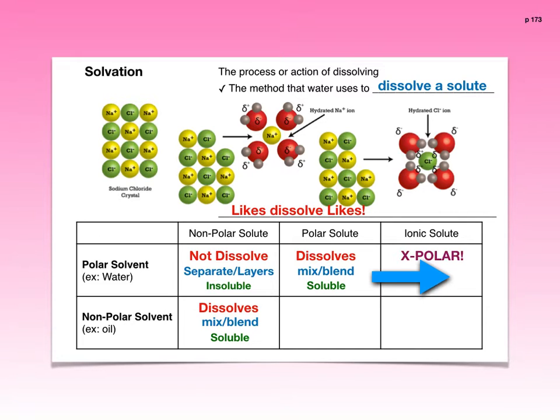If you place a polar solute into a non-polar solvent like oil, the polar solute will not dissolve in the non-polar solvent. Because they are not alike, they have opposite polarities. So that polar solute will not dissolve in the non-polar solvent. In fact, it will separate out or create some sort of layer. Polar solutes are insoluble in non-polar solvents.